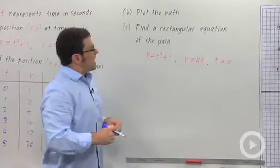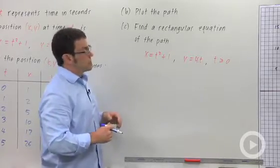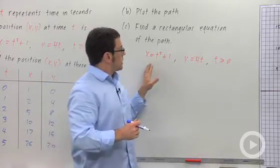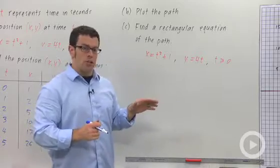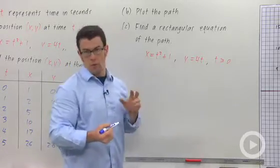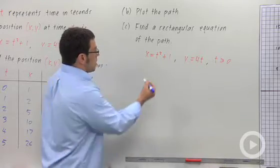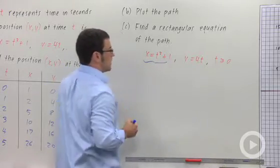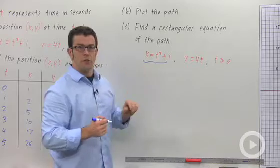So, part c asks me to find a rectangular equation of the path. So I have my parametric equations. A rectangular equation is going to be an equation that's only in x and y and doesn't have the t, the parameter. And so, what I'm going to do is start with this equation and solve it for t.